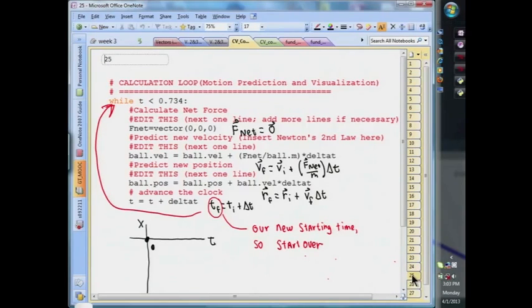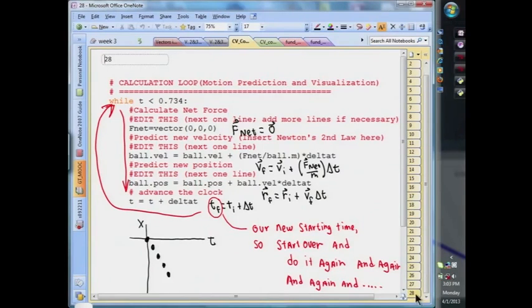We start over, and we do the whole thing again, and again, and again. With each pass through the loop, we keep advancing the time, a small time step delta t.